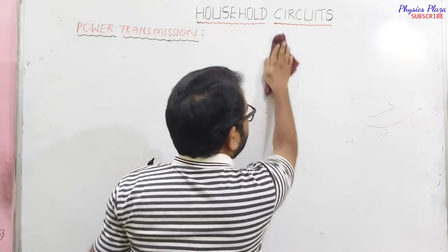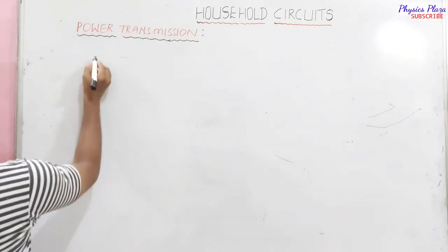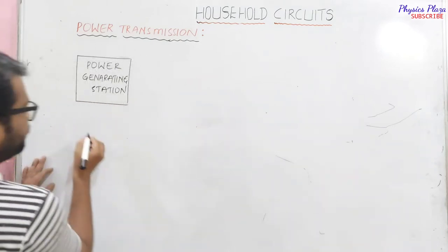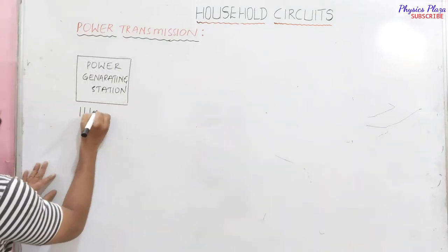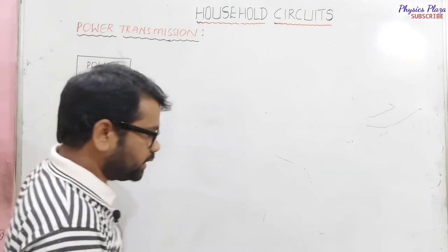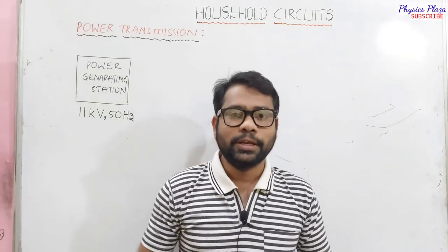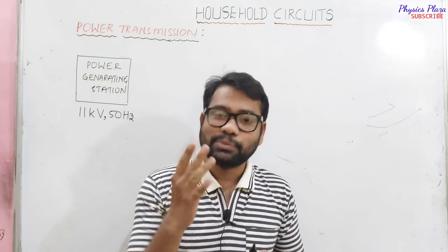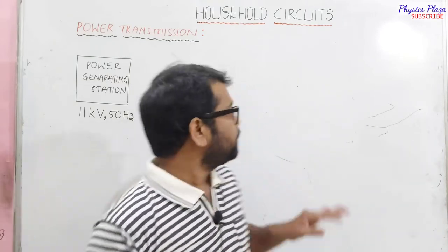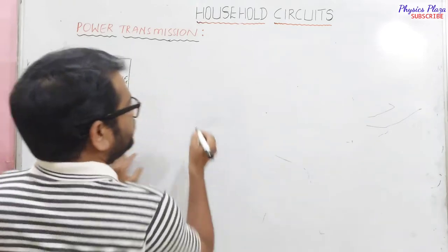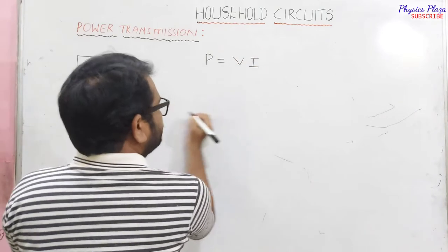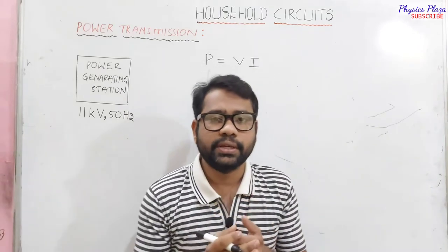Now back to the power generating station. Power is generated with 11 kV and 50 Hz frequency. In what method do we transmit the electrical power generated at the power station? There are two methods. First, recall the power expression: Power = Voltage × Current.